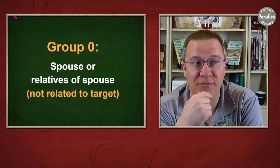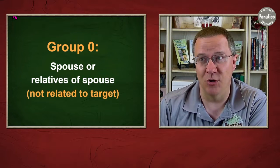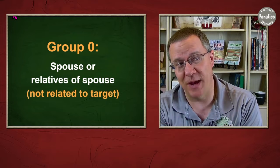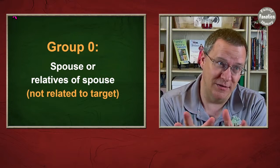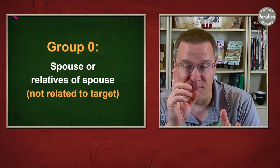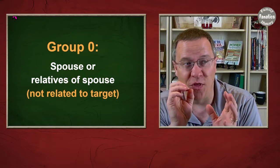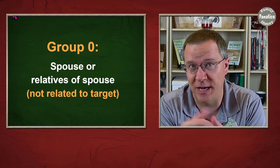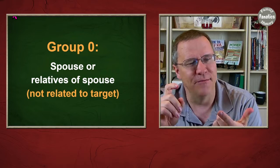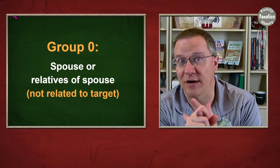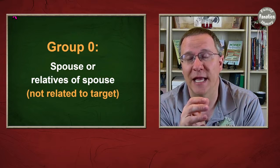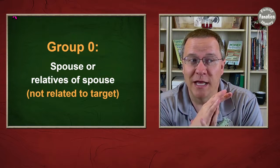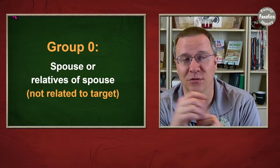First off is Group 0. In Group 0, you are going to want to have the spouse or the relatives of the spouse. In particular, they are not related to the target person. So you wouldn't have the children of that spouse, but you would have their brothers and sisters, their aunts and uncles, their parents, or any other relative that is related to the spouse but not related to the target person.